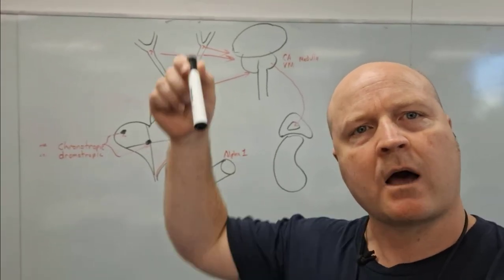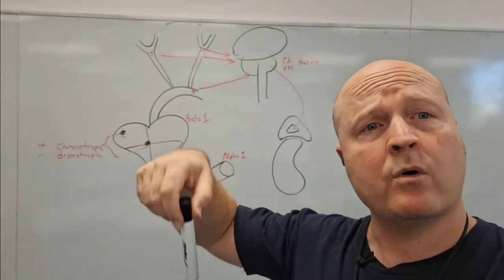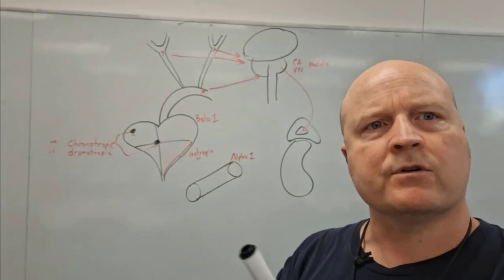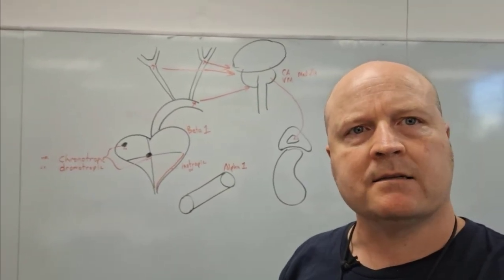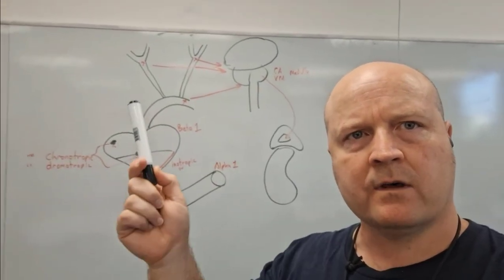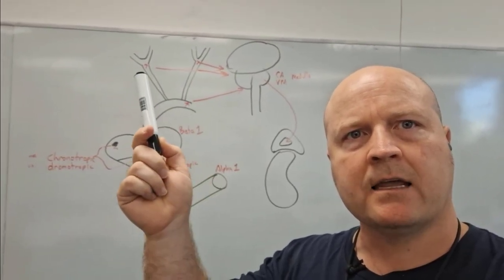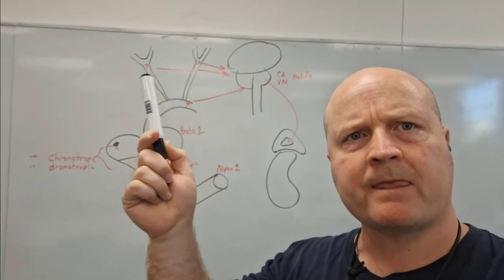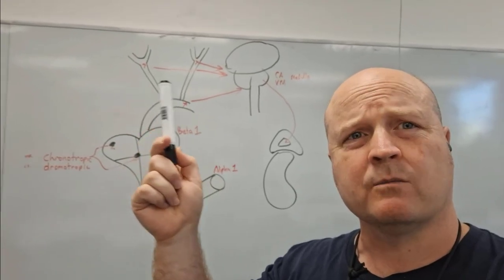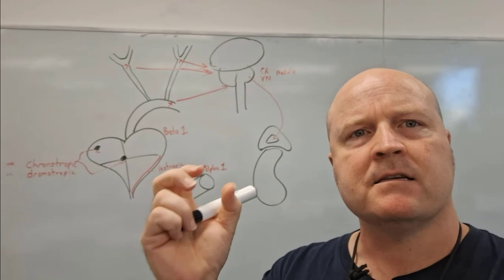Alright, so something's happened that's caused our blood pressure to drop, hypo low. First step is how are we going to detect it? So we have in our arch of the aorta, the aortic sinus, and in our carotid sinuses, blood pressure receptors called baroreceptors, and they sense stretch.